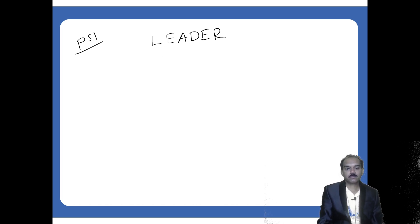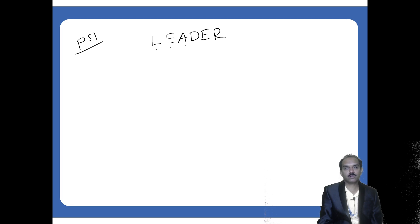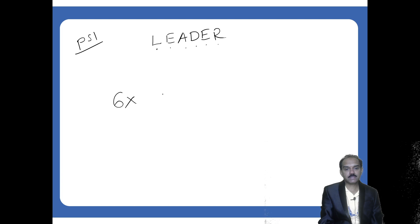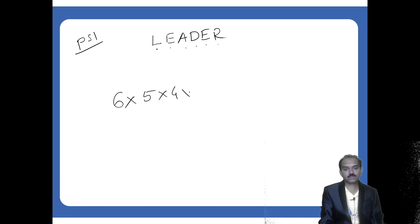First, count the number of letters in the word. Start with 6, go till 1: 6 × 5 × 4 × 3 × 2 × 1.